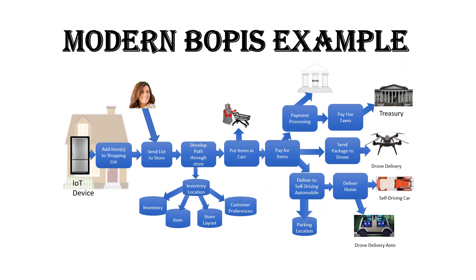We're going to use this future buy-online-pickup-in-store example to show how to use this model. The example starts with an IoT device — in this case a refrigerator in your home — that has found out that you're low on eggs, so it adds eggs to your shopping list.